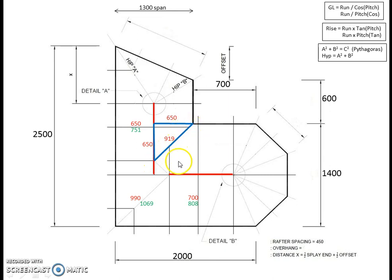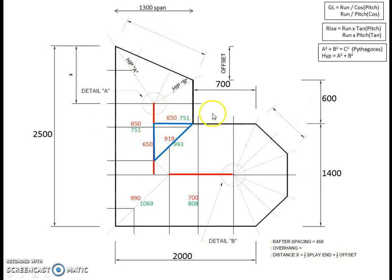To get the geometric length of that valley we do the same thing — we find the geometric length of that rafter. We go 751 squared plus 650 squared, do the same Pythagoras calculation, and that gives us a geometric length of 993. Pause the video and run those figures through your calculator to make sure you've got the same answers.